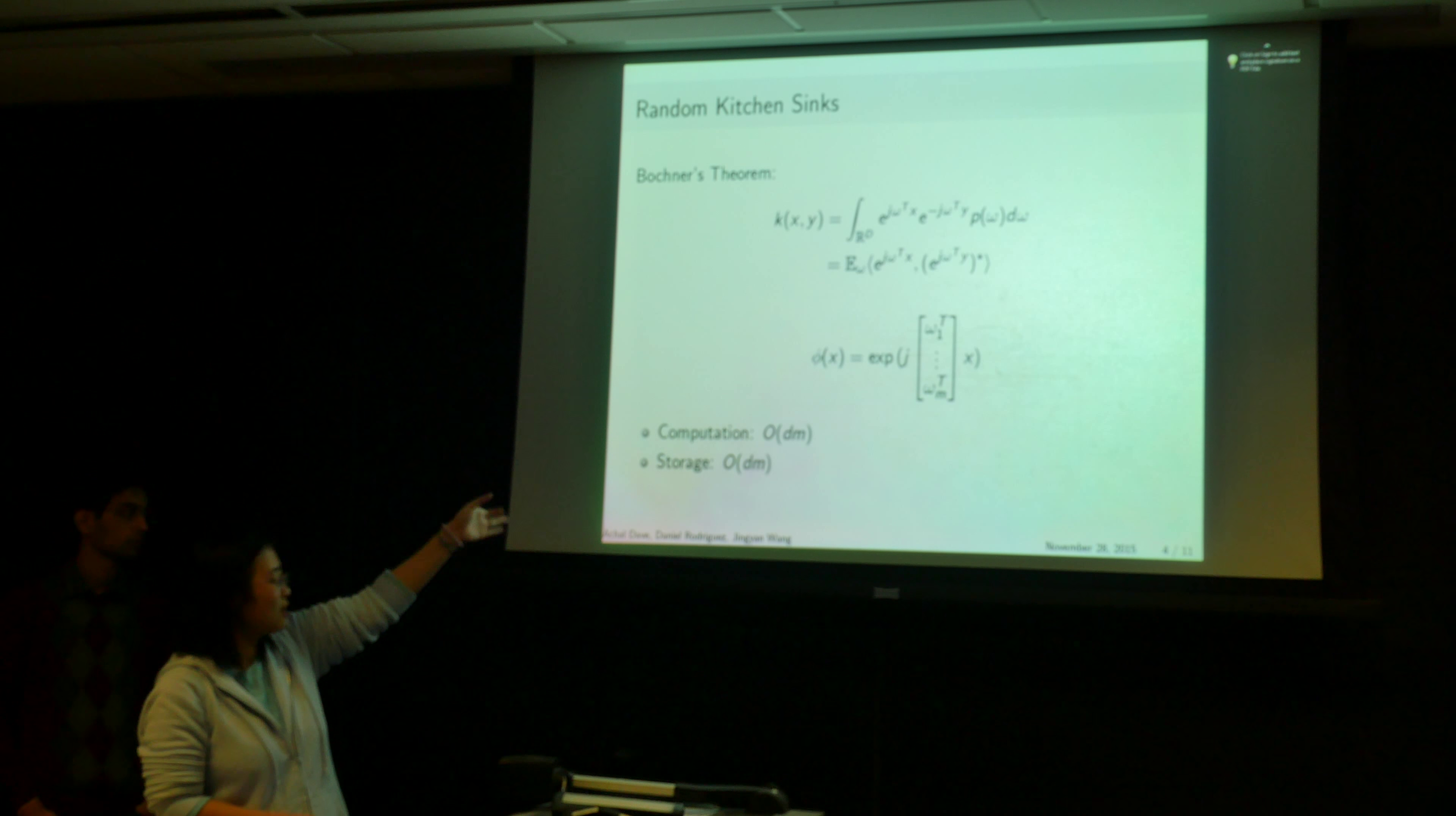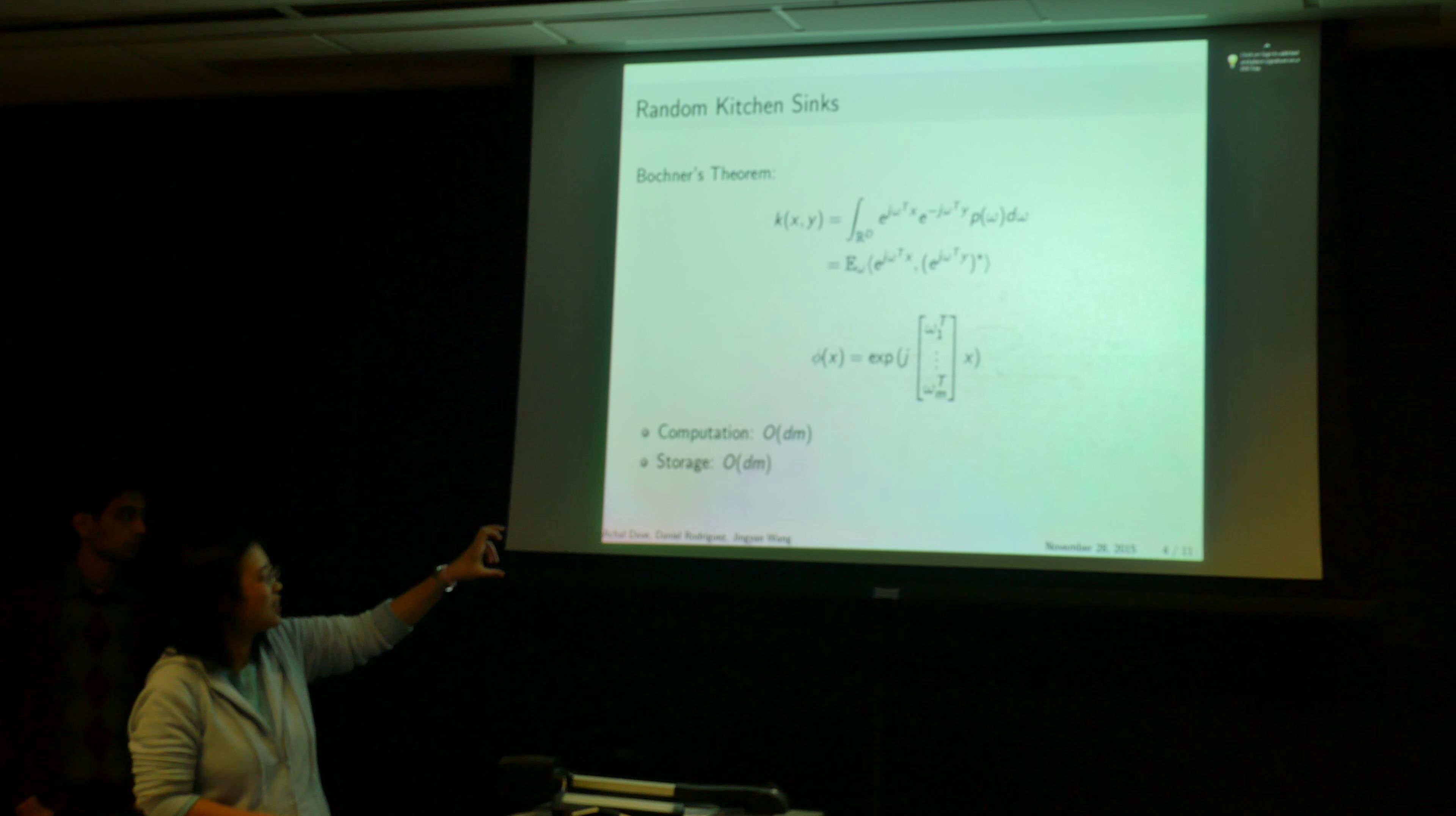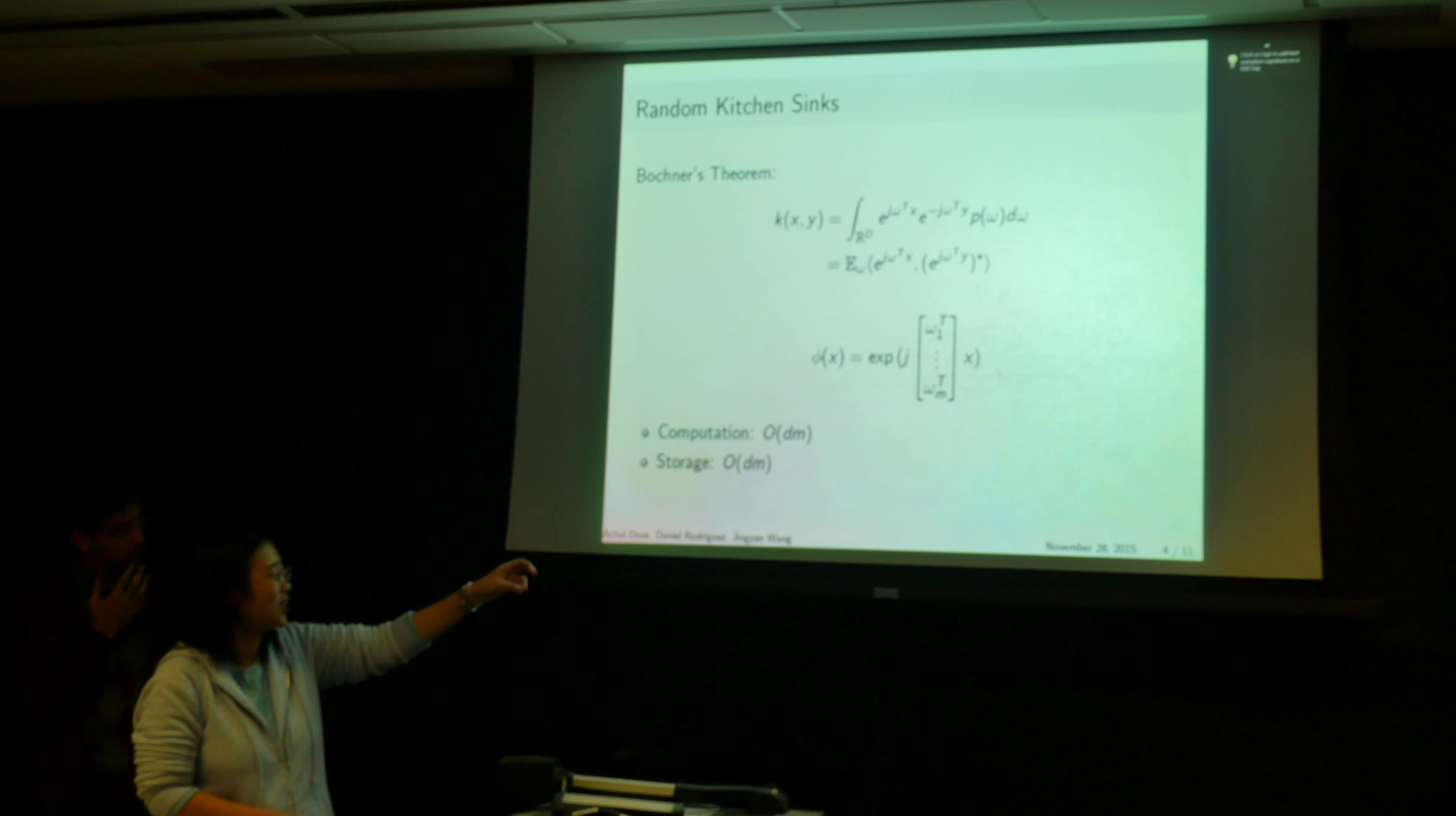Computing this feature map requires a matrix multiplication of size d by m. And it also takes storage of d by m to store this random matrix.